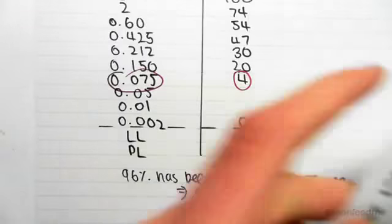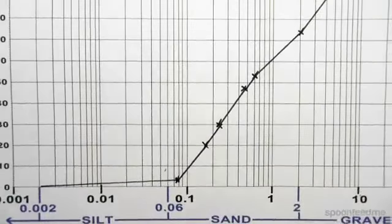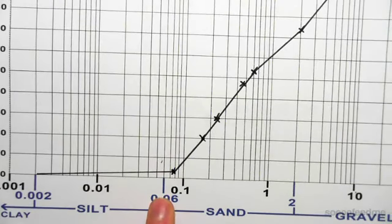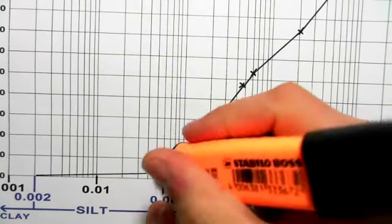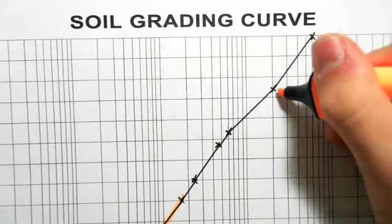So we come to our grading curve and we can highlight the spectrum of sand and the spectrum of gravel. Sand starts at 0.06 to 2 millimeters. So we can highlight this section of our graph up to 2 millimeters, which is there.